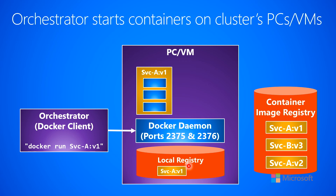Obviously the Docker daemon will see the local registry, and because the image is already there, it won't have to go to the external container image registry. It can just create a new container with that image, and so the container starts up very, very quickly after the very first time. That gives you a sense of how the orchestrator does its stuff.